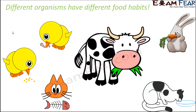Different animals have different food habits based on their body structure. In the case of human beings, we can eat both plants and animals — our body structure is designed to digest both. But many animals are designed to eat only plant products, while others can only digest animal products.